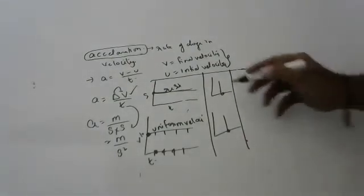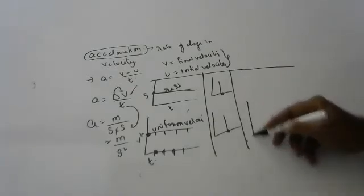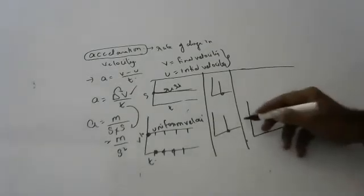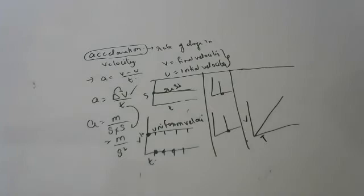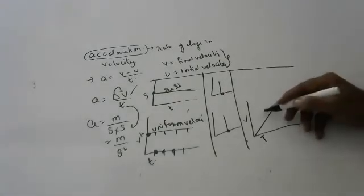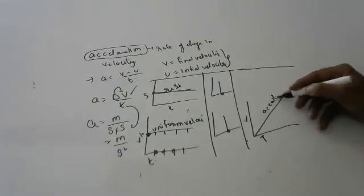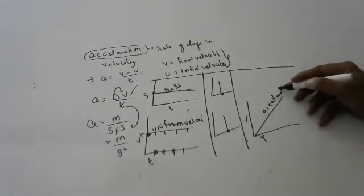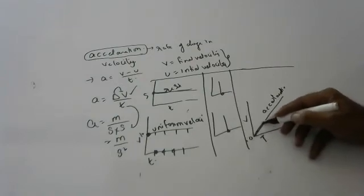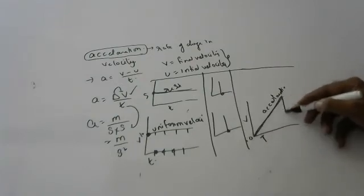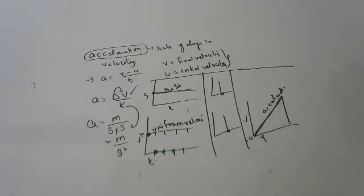In a V-T graph, a straight line with positive slope indicates acceleration — uniform acceleration. Uniform acceleration means starting from zero and increasing speed over a given time.